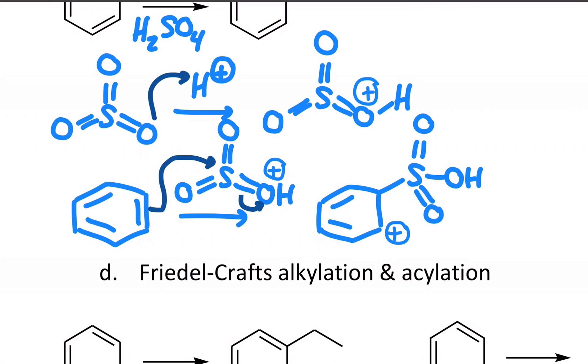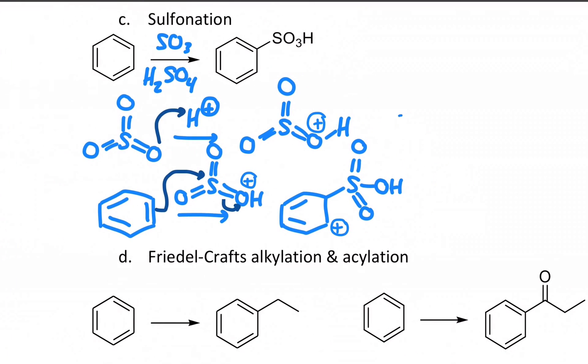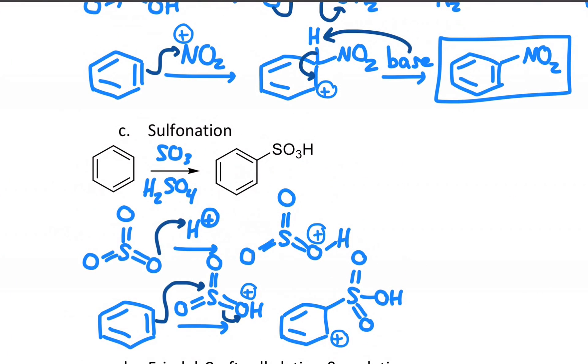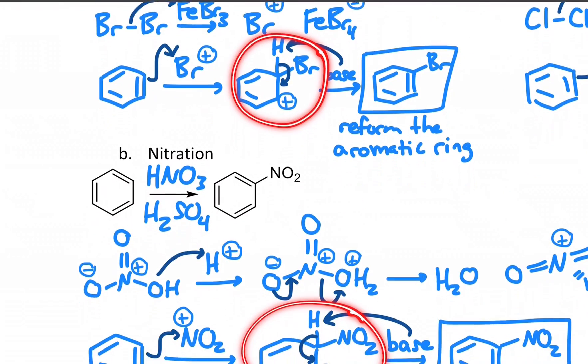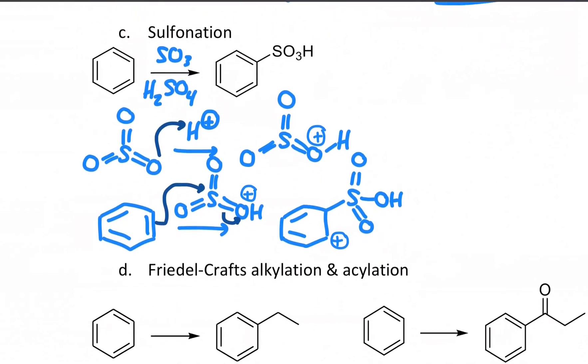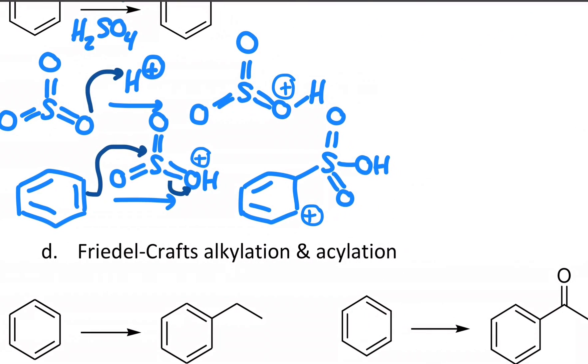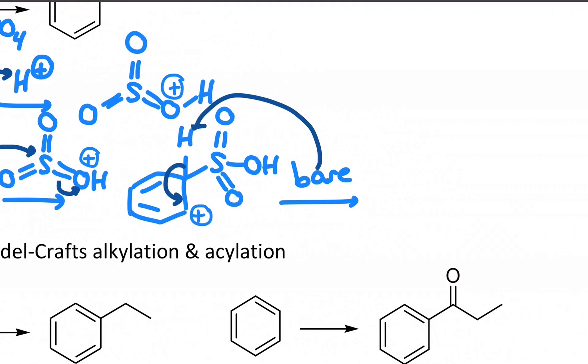Those other oxygens still there along for the ride. And as a result, a plus charge on the other carbon. We have the same kind of thing we saw before with the bromine. The new group is attached, we have a plus charge and we want to reform our aromatic ring. So something will act as a base and it always takes away the hydrogen directly attached to the same carbon where the new group goes. That's the hydrogen that gets lost.